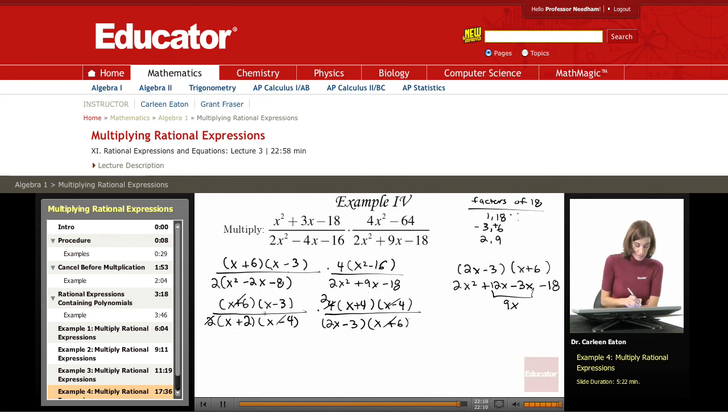Now multiply what remains. I'm going to have 2 times x minus 3 times x plus 4, multiplying the numerator. In the denominator, I have x plus 2 times 2x minus 3. The first step was definitely the longest—factoring each one of these polynomials out as far as I could, then canceling out common factors, and finally multiplying what remains.